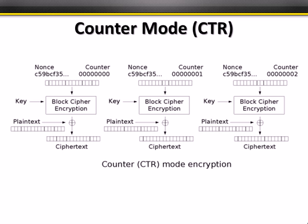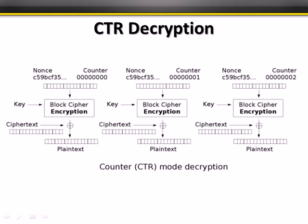Counter Mode (CTR) is another approach to reducing patterns. Rather than an initialization vector, we use a nonce — a number used once — and add a counter to it. We encrypt the nonce using the key, then XOR that with the plain text to get ciphertext. The blocks are not chained; the counter simply increments each time. This is very fast, but a weakness is that an incremental pattern may develop in the code, potentially allowing frequency analysis.